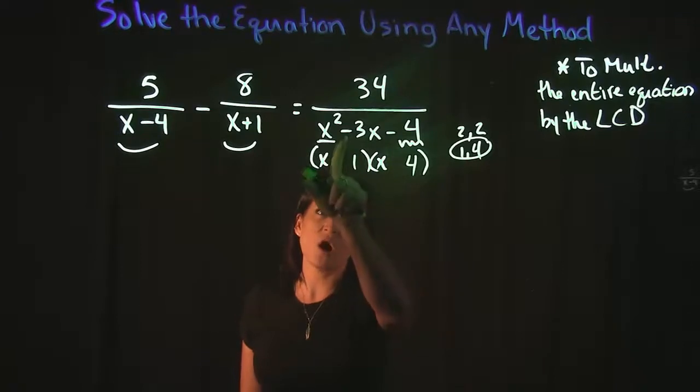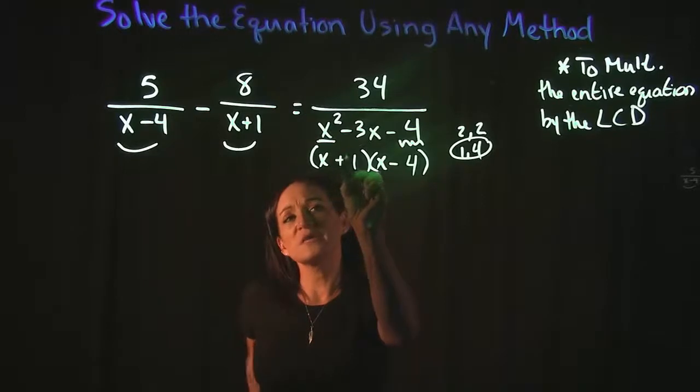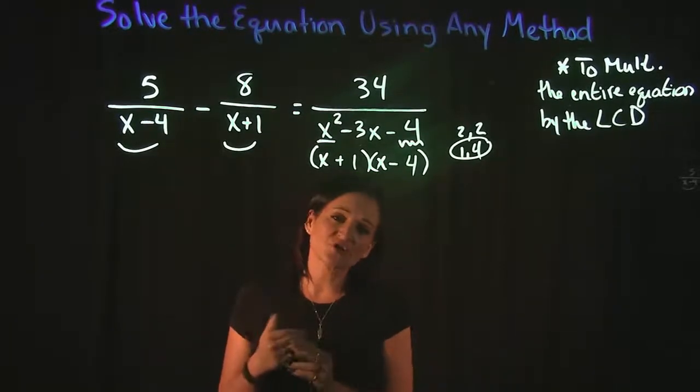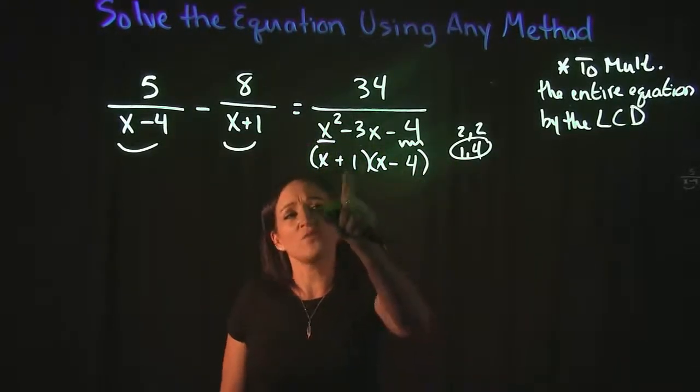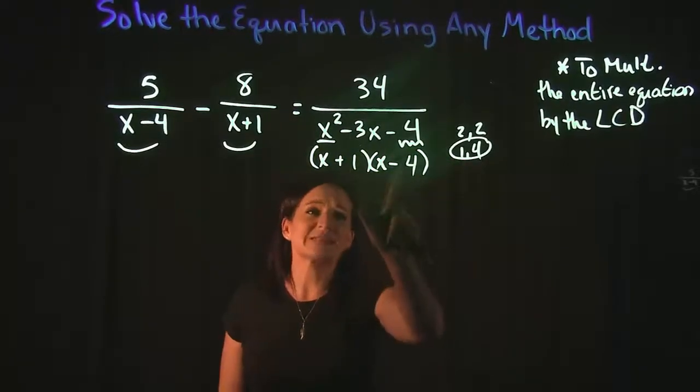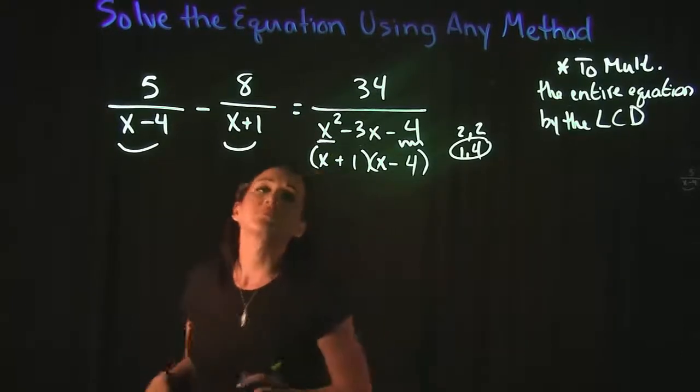So our middle term here is negative, which means the negative needs to go with the 4, which means this one is going to be positive. Remember you want to backtrack and you want to double-check. Make sure they multiply to get your last term, add to your middle term. Positive 1 times negative 4 is a negative 4. Positive 1 plus negative 4 is a negative 3, so it does all check out.